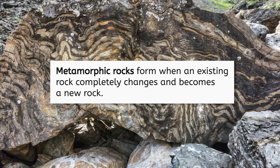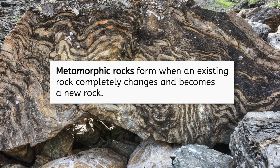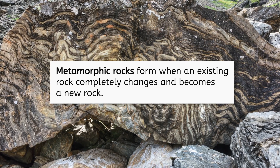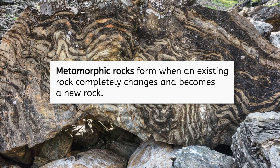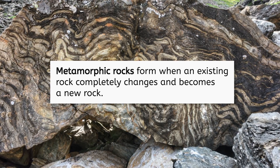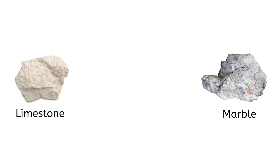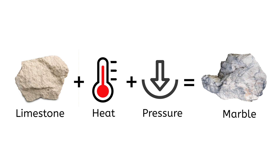Metamorphic rocks are rocks that form when an existing rock completely changes and becomes a new rock. This occurs as a result of heat and pressure, which can actually change the chemical composition of the rock itself. This is marble, a type of metamorphic rock. Marble starts off as limestone, which is a sedimentary rock. When limestone is subjected to intense heat and pressure deep within the earth, it transforms into marble.